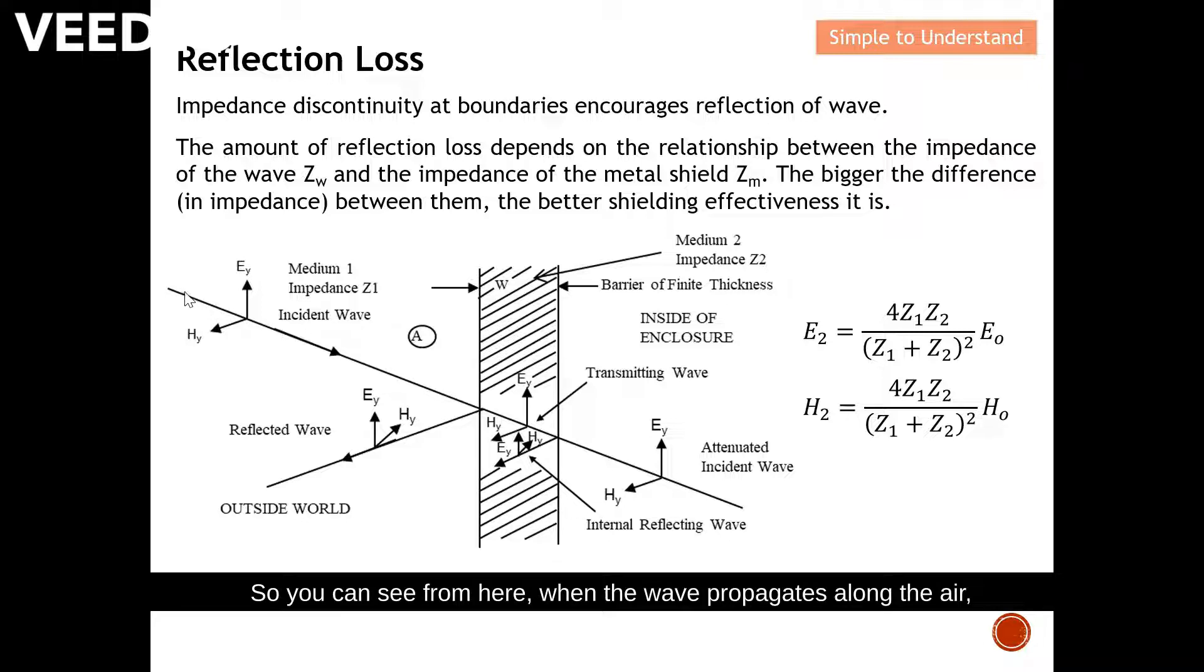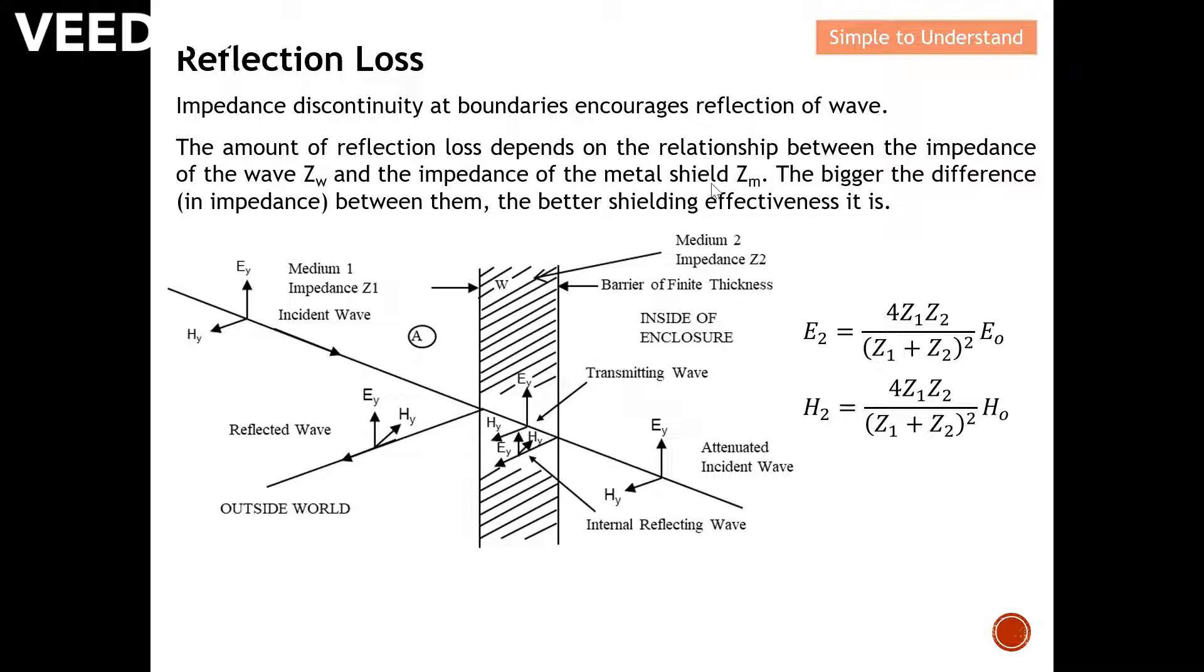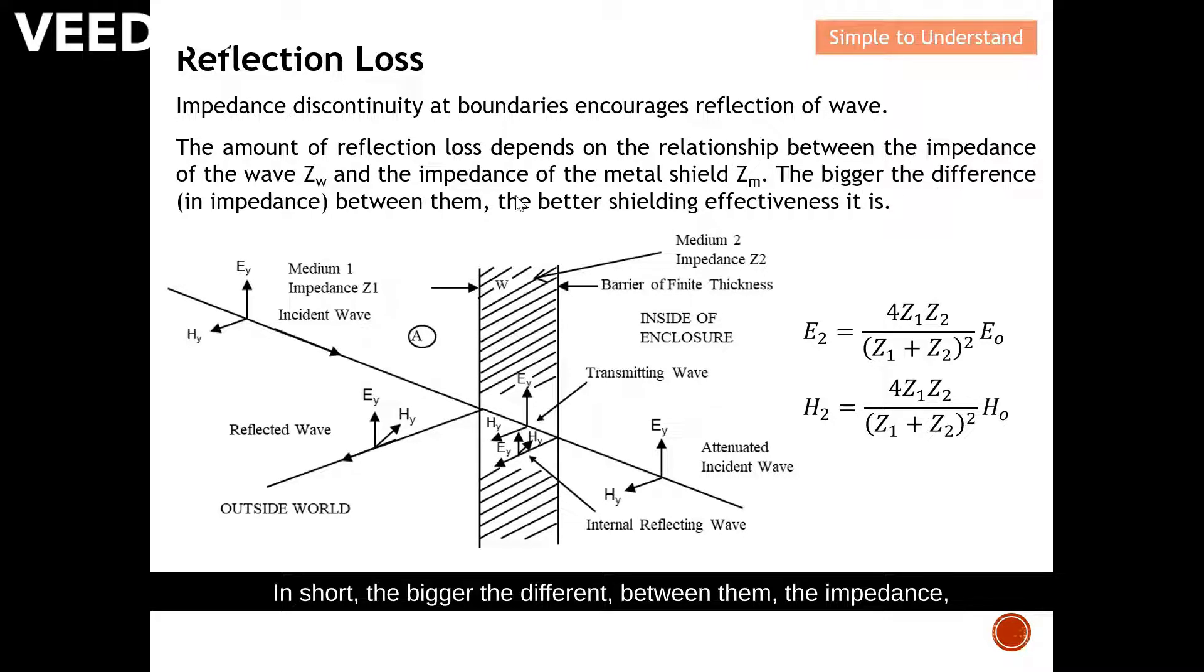You can see from here, when the wave propagates along the air, there is no refraction because the impedance is constant at 377 ohm. When it actually hits the shield, there will be an impedance discontinuity. If this shield is a conductive material, most of the field will be able to reflect back, especially for electric field. The amount of refraction loss depends on the relationship between the impedance of the wave and the impedance of the shield. In short, the bigger the difference between the impedances, the better shielding effectiveness it is.